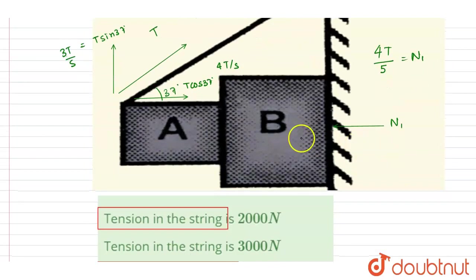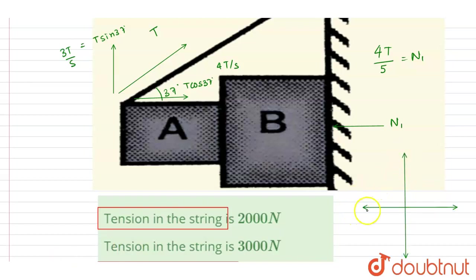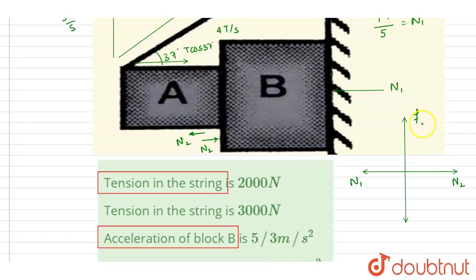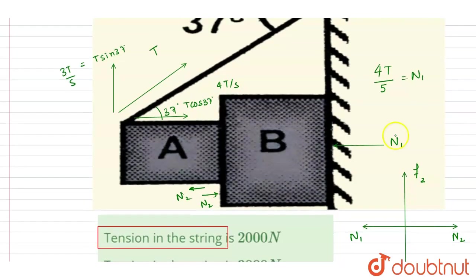Now looking at the FBD of block B — the horizontal and vertical forces. Block B will not move in the horizontal direction. We have N1 as the normal reaction from the ground and N2 as the normal reaction between A and B. In the upward direction, friction force acts, and the weight acts downward.